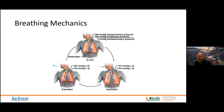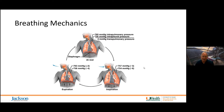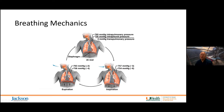Breathing mechanics — this is a bell jar application. Looking at the diaphragm at rest, its resting length is somewhat domed, so when it contracts during inspiration, the intercostal muscles elevate the ribs. That changes the atmospheric pressure within the thoracic space, ultimately producing an inflow of air.